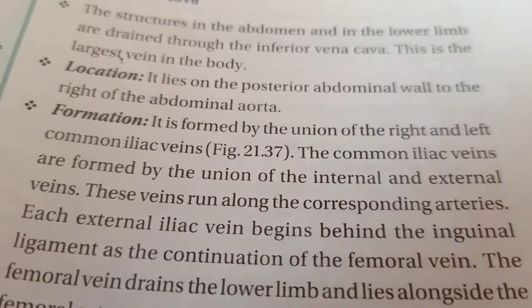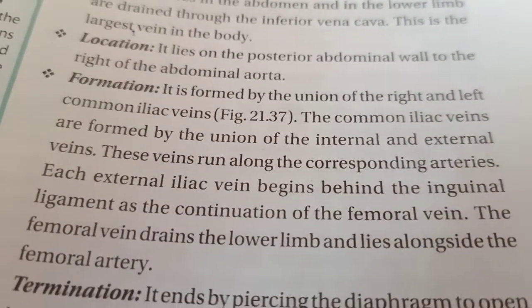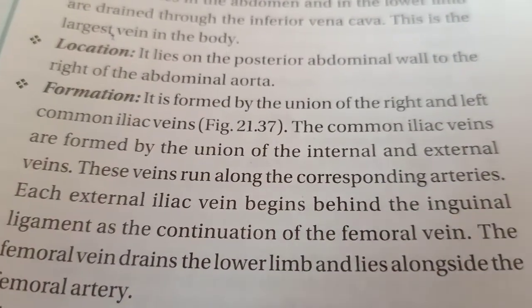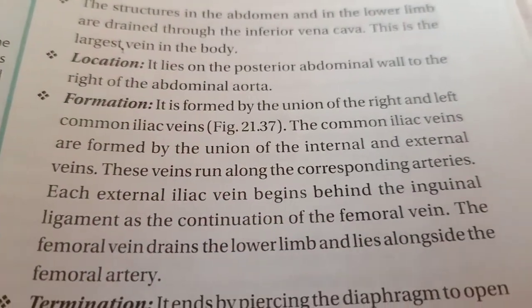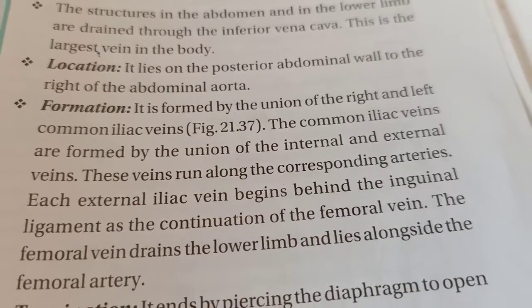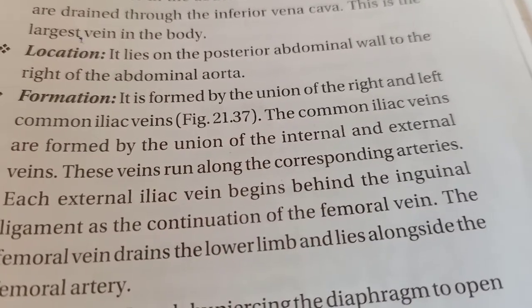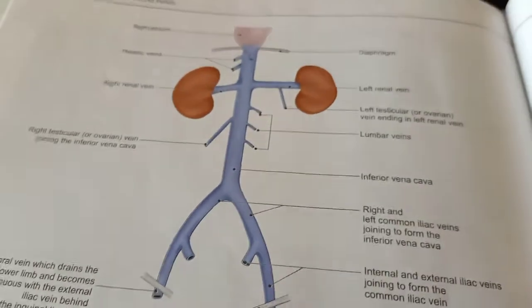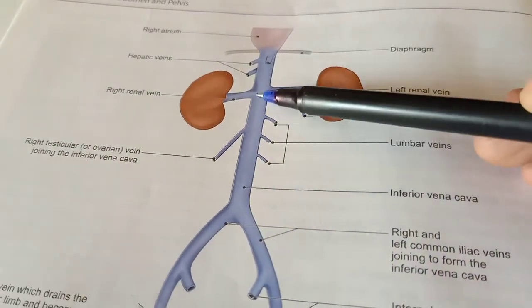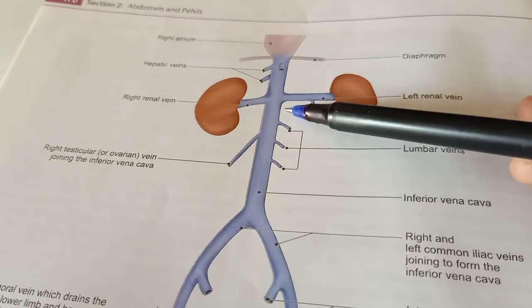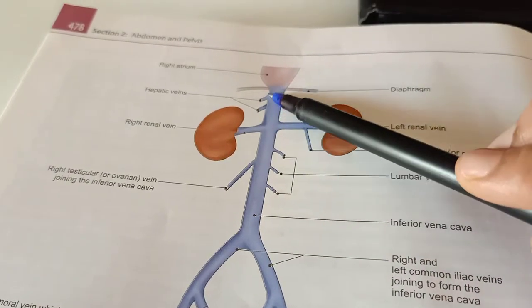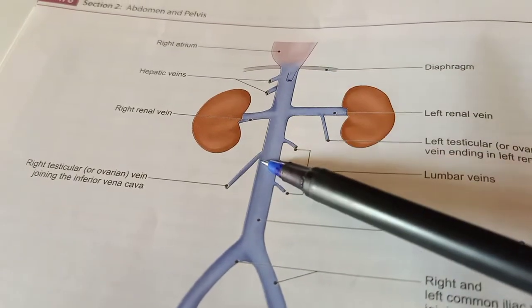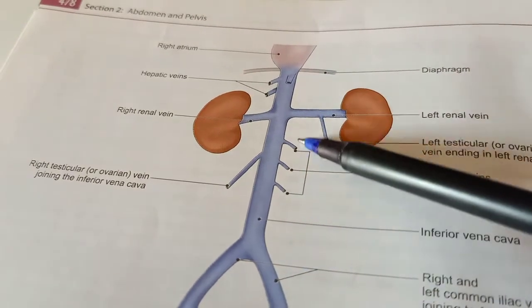What is the formation of IVC? It is formed by the union of the right and left common iliac veins. And these common iliac veins are formed by the union of the internal and external iliac veins. Looking at the diagram, this big vein is the inferior vena cava, which is right to the abdominal aorta. This vein brings deoxygenated blood up to the right atrium.